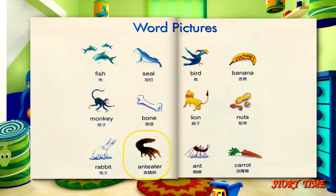Picture ten: anteater. Picture eleven: ant. Picture twelve: carrot.